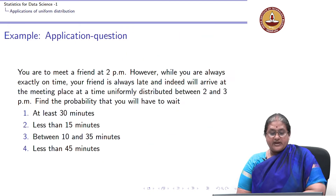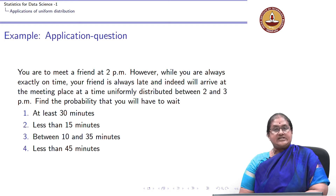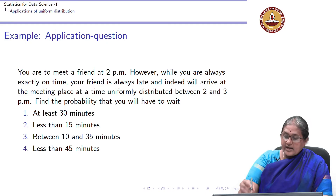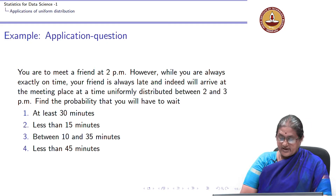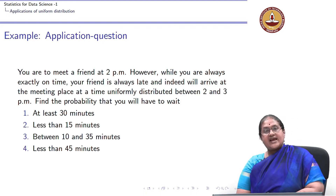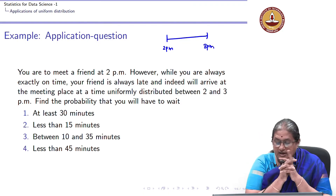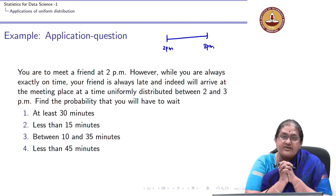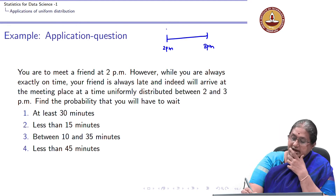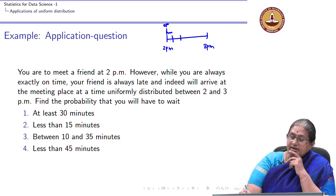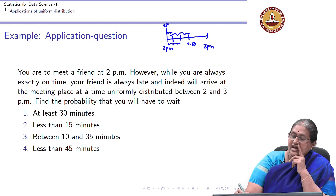Let us look at an application of a uniform distribution. Suppose I am asked to meet a friend at 2 pm. I am always on time but my friend is always late and can arrive any time between 2 pm and 3 pm with equal chance. If X is my waiting time: no wait if he arrives at 2, 10 minutes if at 2:10, up to 60 minutes if at 3.